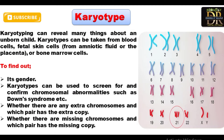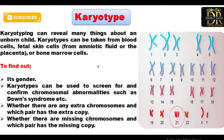Karyotype analysis is used to find out abnormalities or characteristics of an individual's chromosomes. It can reveal many things about an unborn child and can be performed using blood cells, fetal cells, skin cells, amniotic fluid, or bone marrow cells. Karyotype analysis can indicate the gender of the fetus and screen for chromosomal abnormalities such as Down syndrome.